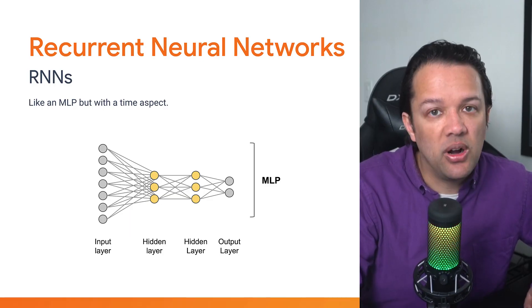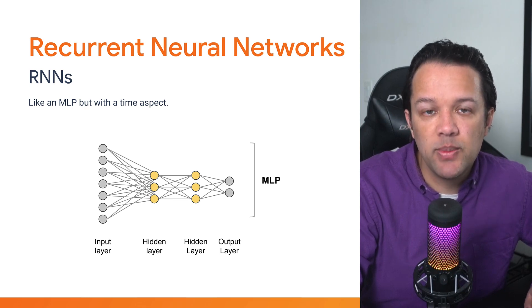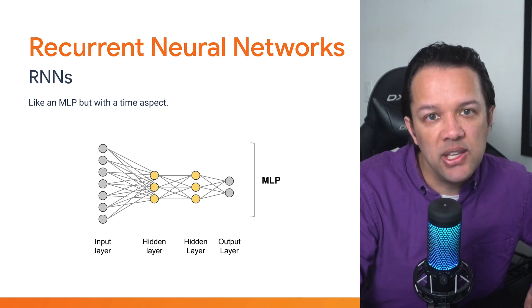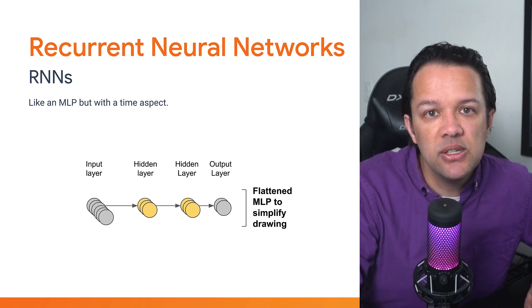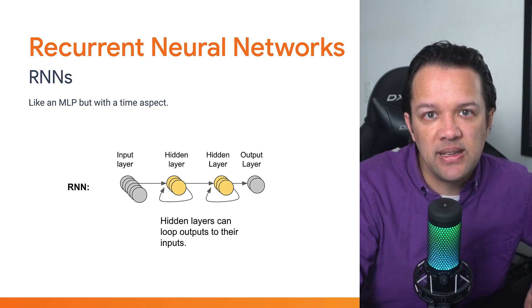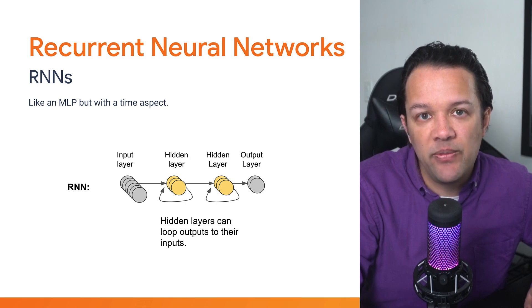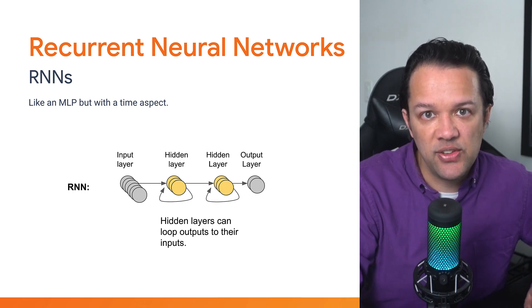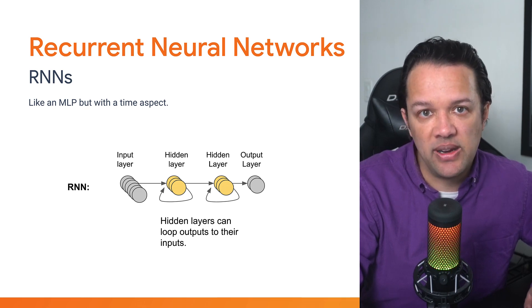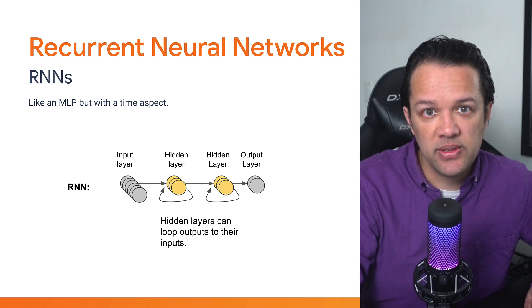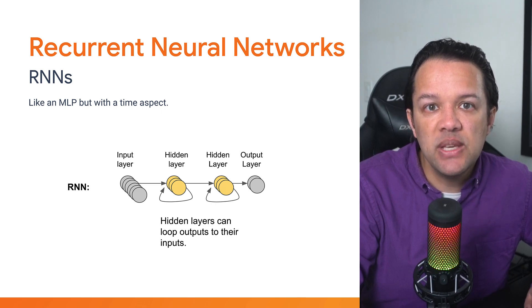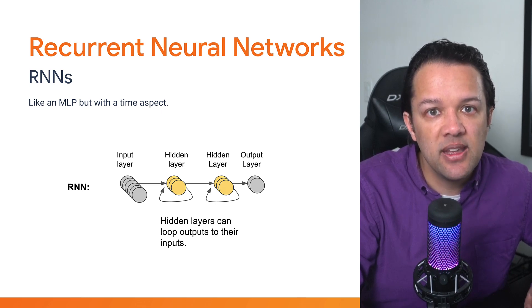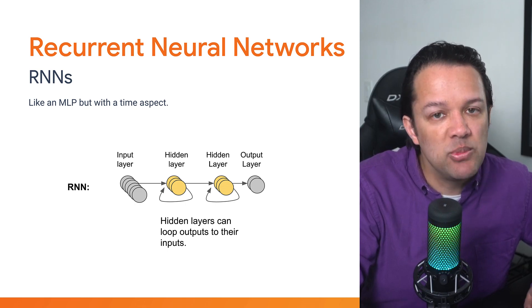Next up are recurrent neural networks, or RNNs for short. These are like multi-layer perceptrons but with a time aspect. In an RNN, the hidden layer's outputs are allowed to loop back to become their inputs as well. You may also hear of LSTMs, which stands for Long Short Term Memory — a special kind of RNN where connections between neurons can form a sequence over many time steps, allowing them to capture temporal relationships better than other networks. Often you'll see this sort of network used to solve things like time series data, speech recognition, or even music generation.